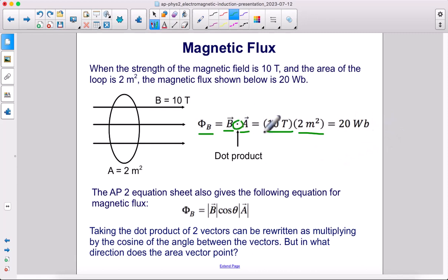This here is a dot product. The AP2 equation sheet also gives the following equation for magnetic flux. Taking the dot product of two vectors, so this dot, as opposed to a cross product which we've seen before, that ended up with sine theta in our equation. A dot product, you end up with cosine theta. So taking the dot product of two vectors can be rewritten as multiplying by the cosine of the angle between the vectors.